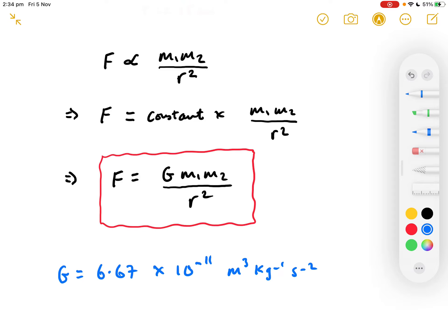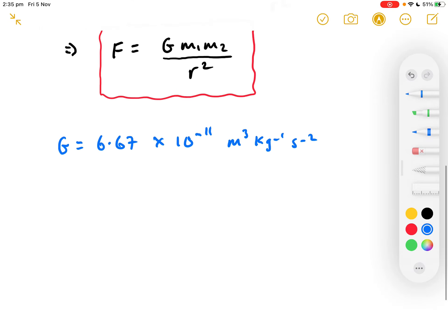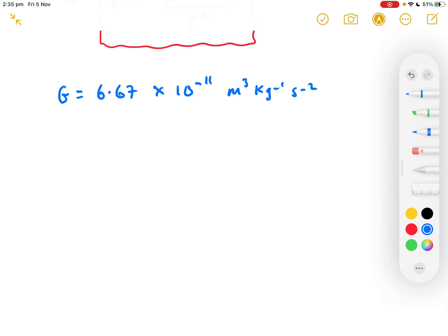And this equation, this law, applies to all masses. But because G is very small, the force between two everyday objects is really quite tiny. So, if we now apply the equation to our two little bodies above, let's see what force 0.3 kilograms would have on 0.05 kilograms, separated by 0.25 of a metre.